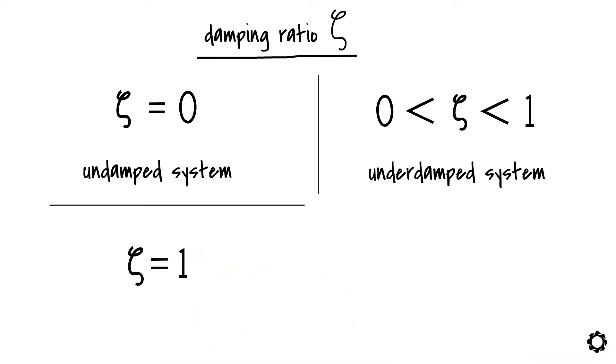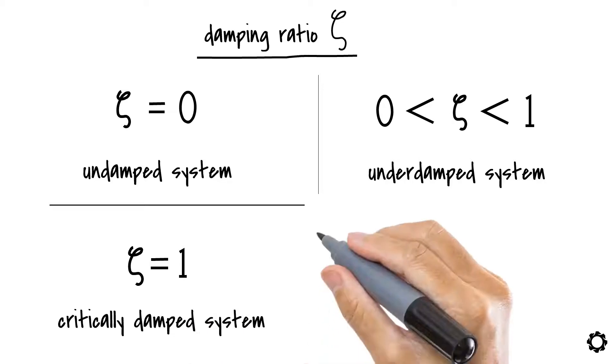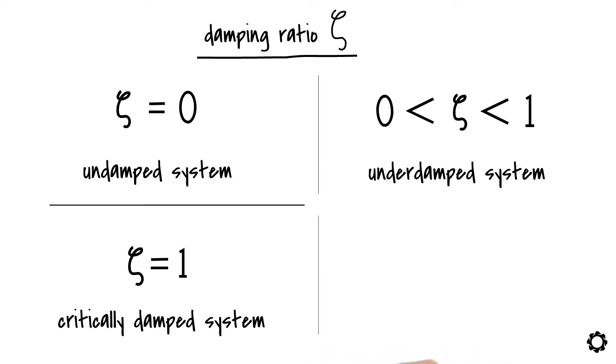If zeta is equal to one, the system is said to be critically damped. If I had to make up a mnemonic for this one, I would say the critically damped is only one. And finally, if zeta is larger than one, well, you guessed it, the system is overdamped.